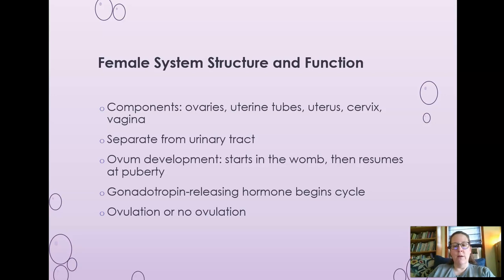What a woman does and how she takes care of her body could potentially affect the health of her grandchildren, because her daughter's eggs are being formed at the time. After birth, ovum development stops. When a baby girl is born, she has about a million primordial follicles — basically early eggs.